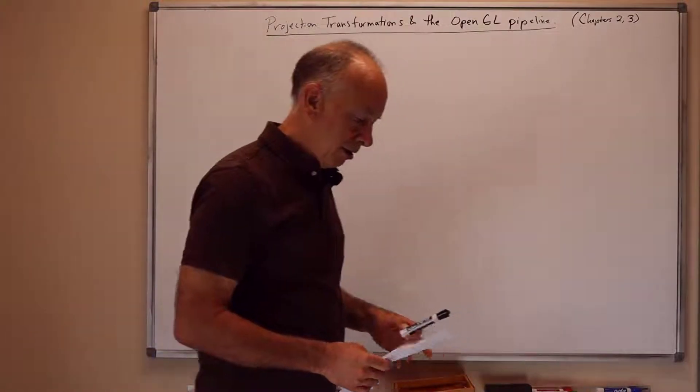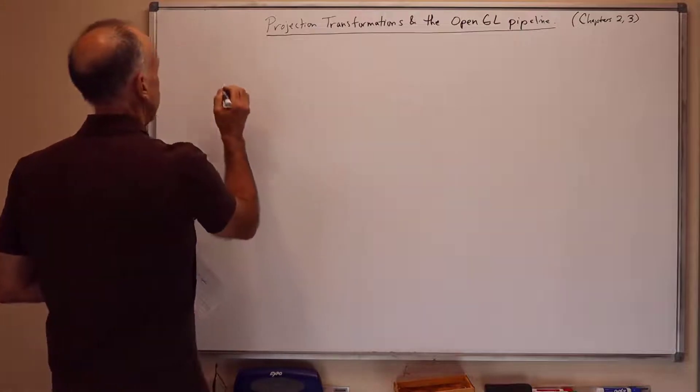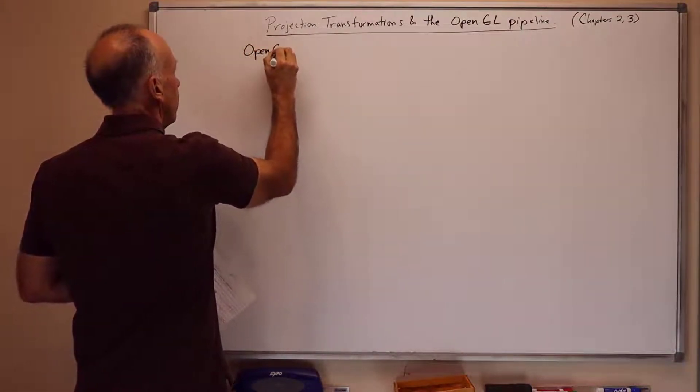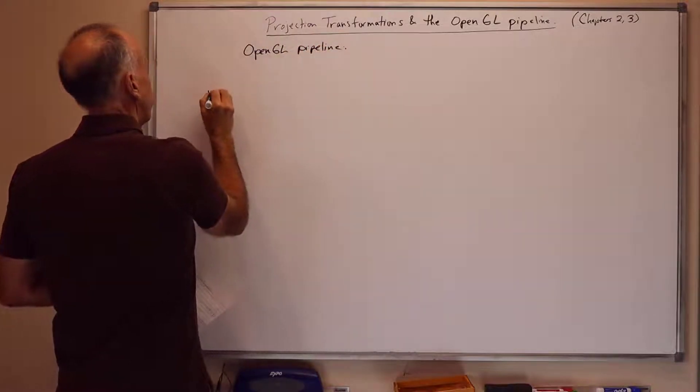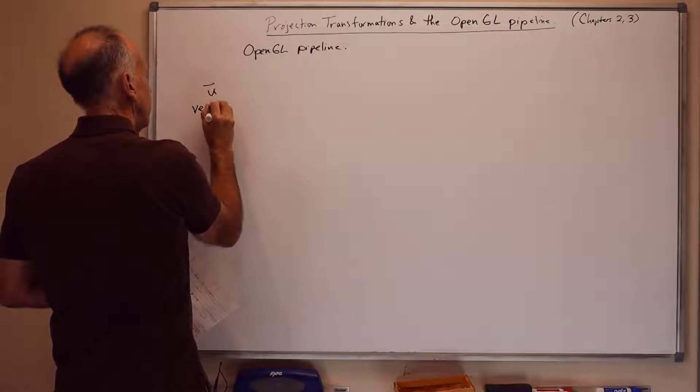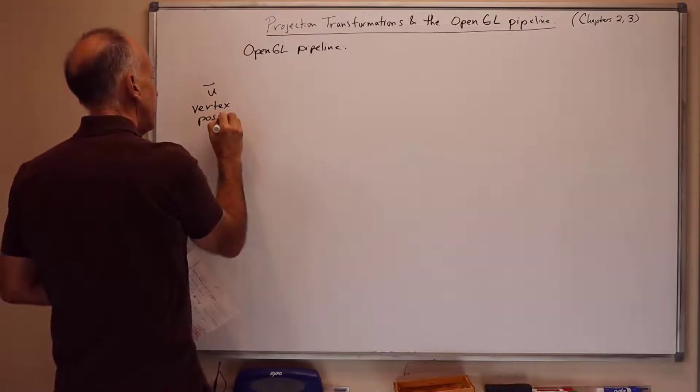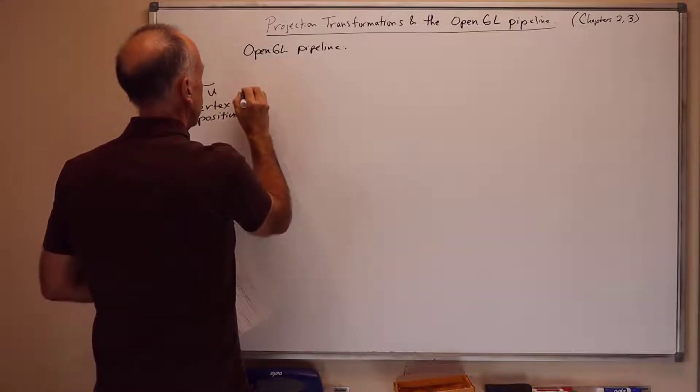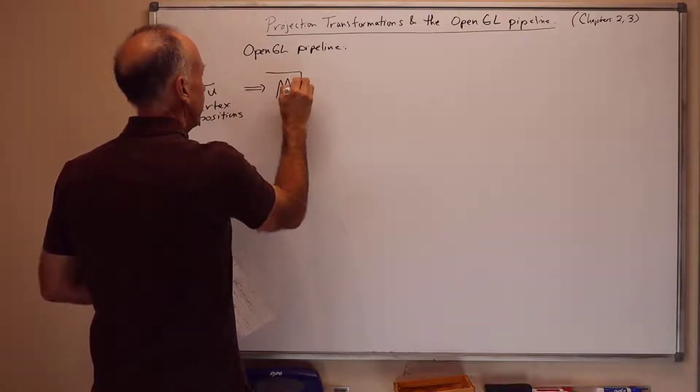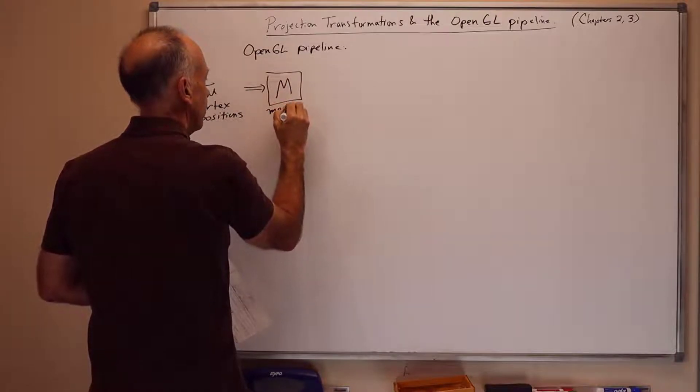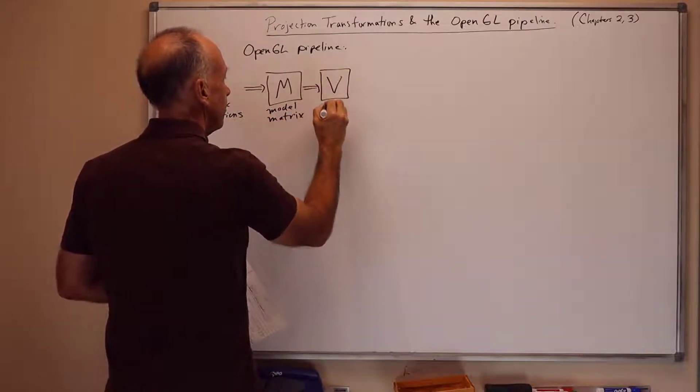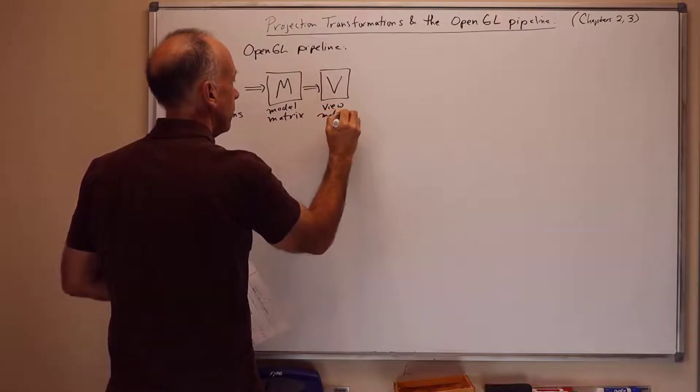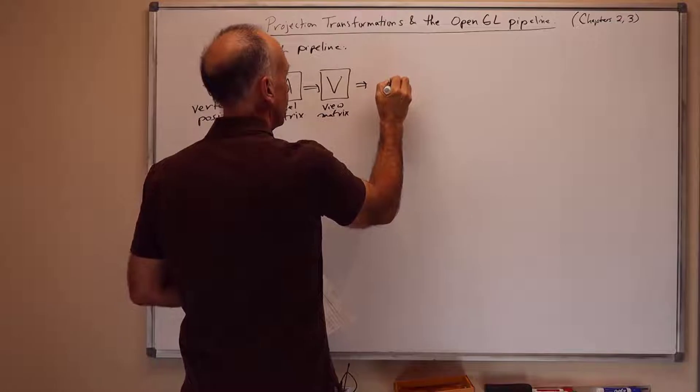So let's start off by recalling the OpenGL pipeline. We have vertex positions U, and they feed into the OpenGL pipeline. Typically there's a model matrix M, and then a view matrix V, and then a projection matrix P.